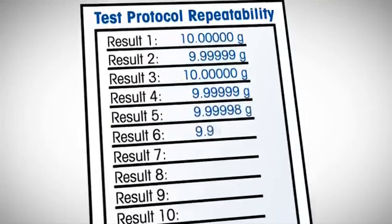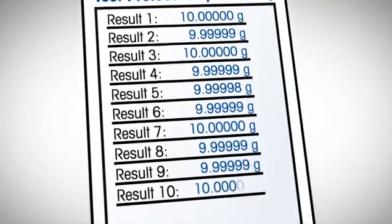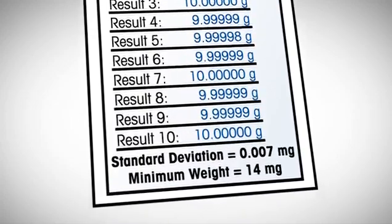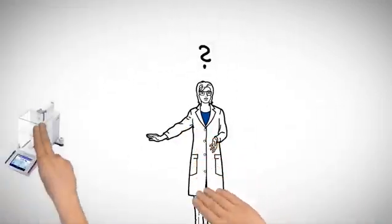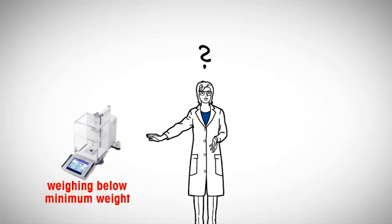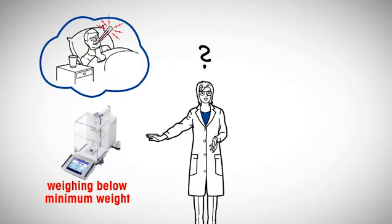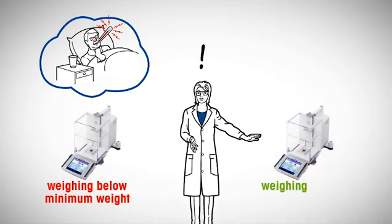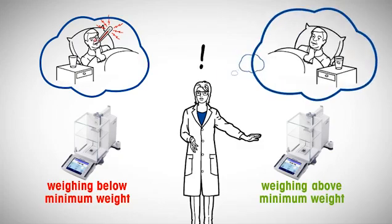Let's make an example. The standard deviation was measured as 7 µg, so the minimum weight equals 14 mg. Establishing the minimum weight of a balance is a simple and effective way to avoid weighing errors. You may think of the minimum weight as the accuracy limit of a balance. As long as you weigh above this limit, measurements are sufficiently accurate.